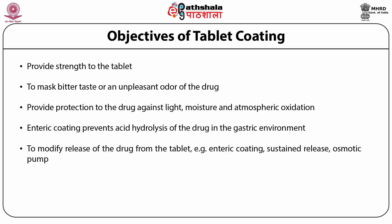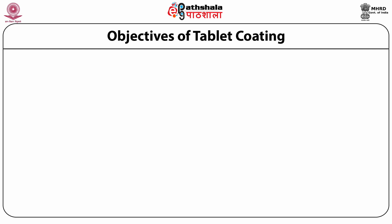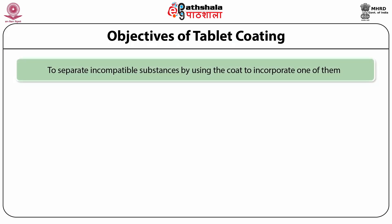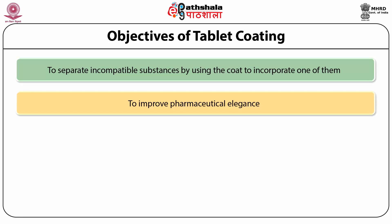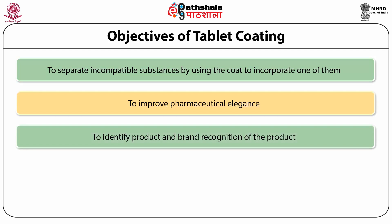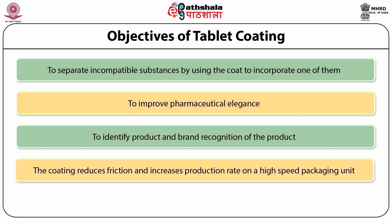Coatings modify release of the tablet — for example, enteric coating, sustained release coating, and osmotic pump devices. Coatings are also used to separate incompatible substances by incorporating them into the coating material. Coating also improves elegance and brand recognition. Finally, coating reduces friction and increases production rate on high-speed packaging units.